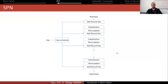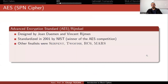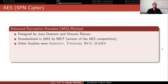Recall that in the SPN picture, you perform rounds many times. Advanced Encryption Standard's original name is Rijndael, which comes from the names of the designers. It was designed by two Belgians, Joan Daemen and Vincent Rijmen, and standardized in 2001 by NIST after winning the AES competition. This is why it is now called AES.